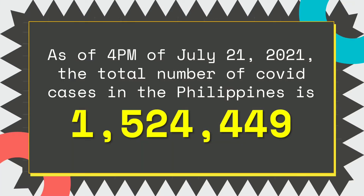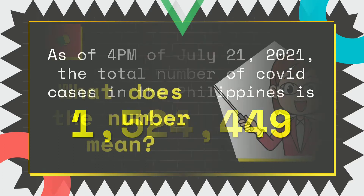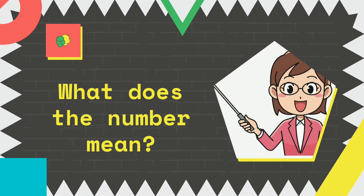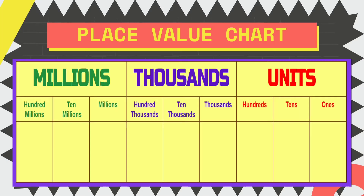To begin with our new lesson, let us read the statement: As of 4 p.m. of July 21, 2021, the total number of COVID cases in the Philippines is 1,524,449. Now, what does the number mean? To help us explain what that number means, we are going to use a place value chart as shown on your screen.